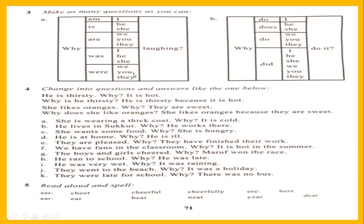Understand — it's a continuous tense in which something is happening and you want to know the reason. When we talk about simple present tense — routines, habits — you make the question: why do I do it? Why does he do it? Why do they do it? These are simple present interrogative sentences. 'Why did' is the simple past: why did I do it? Why did she do it? For continuous tense we use am, is, are; for simple present we use do, does; and for past tense, did. This exercise is just for practice — not included in your scheme of studies.